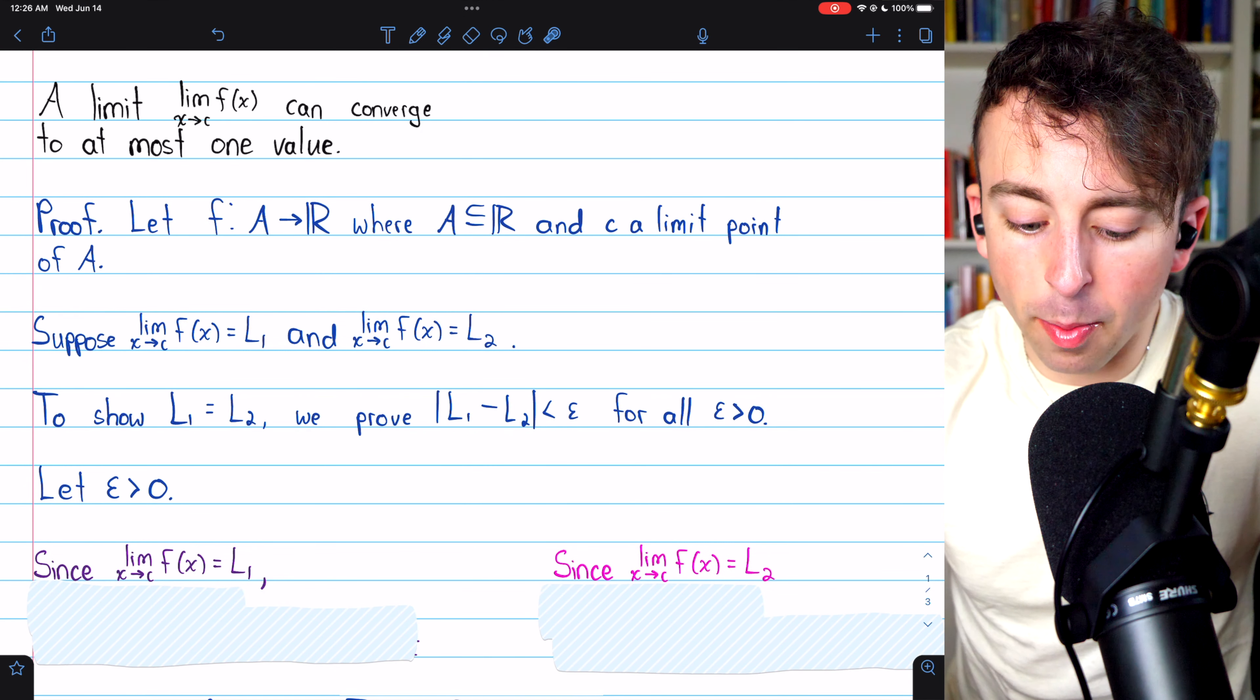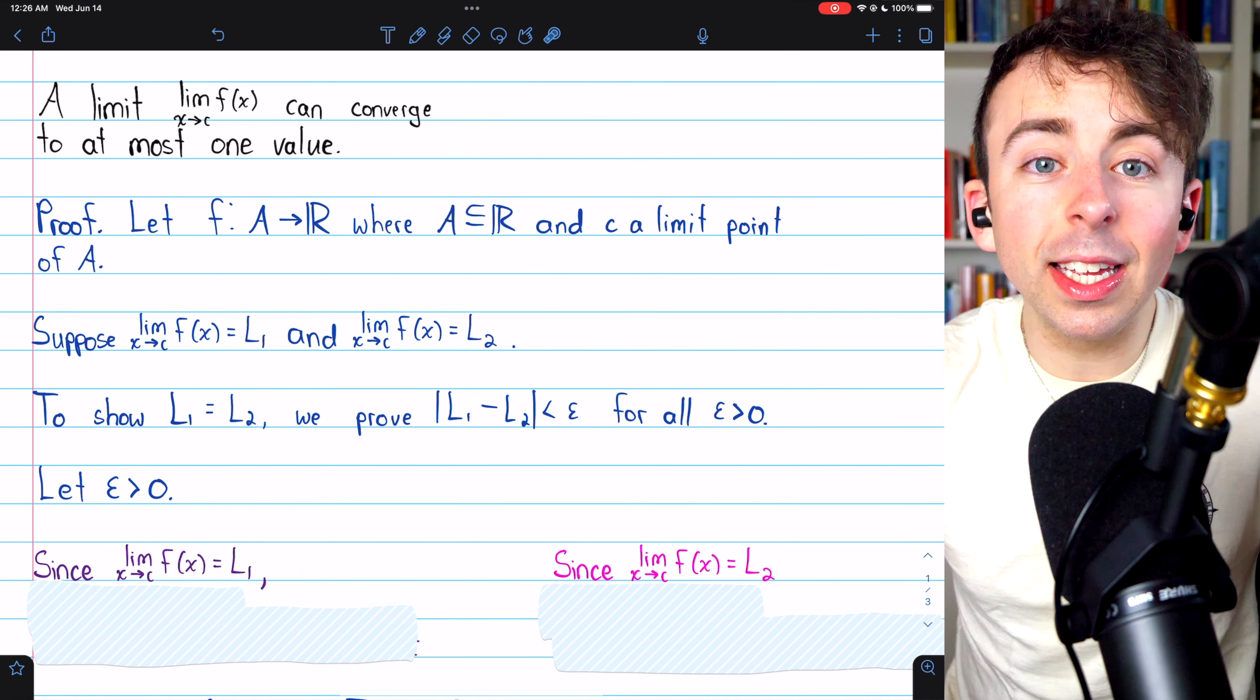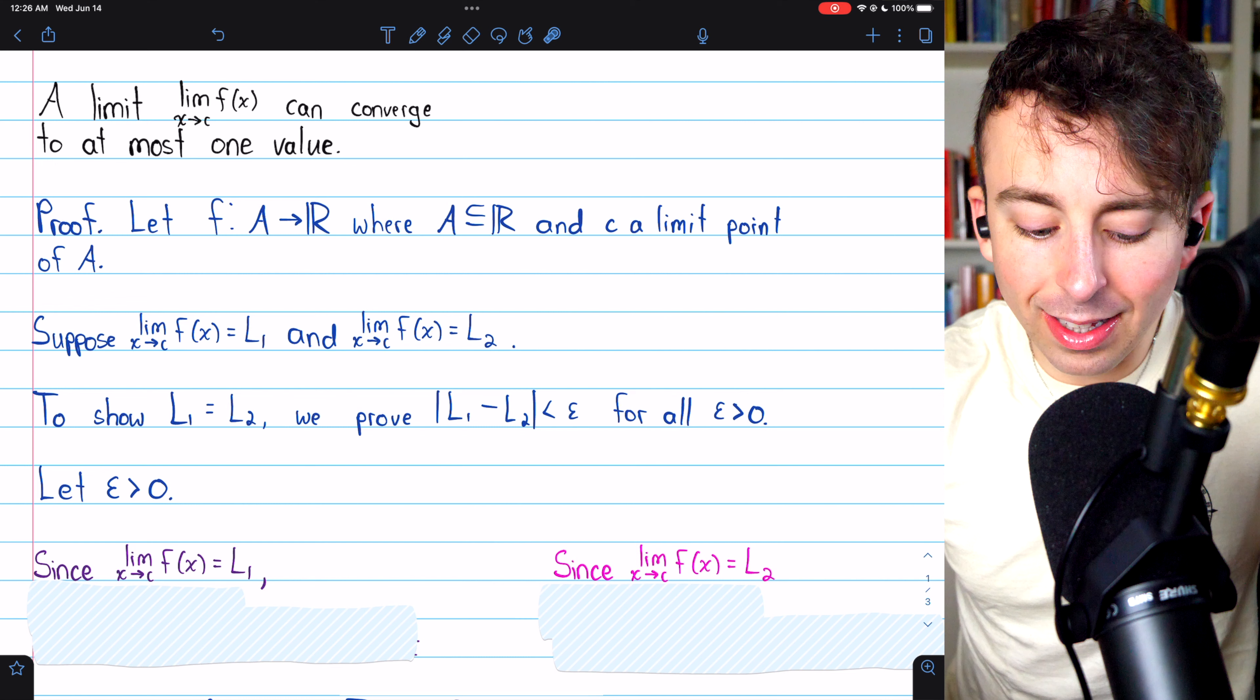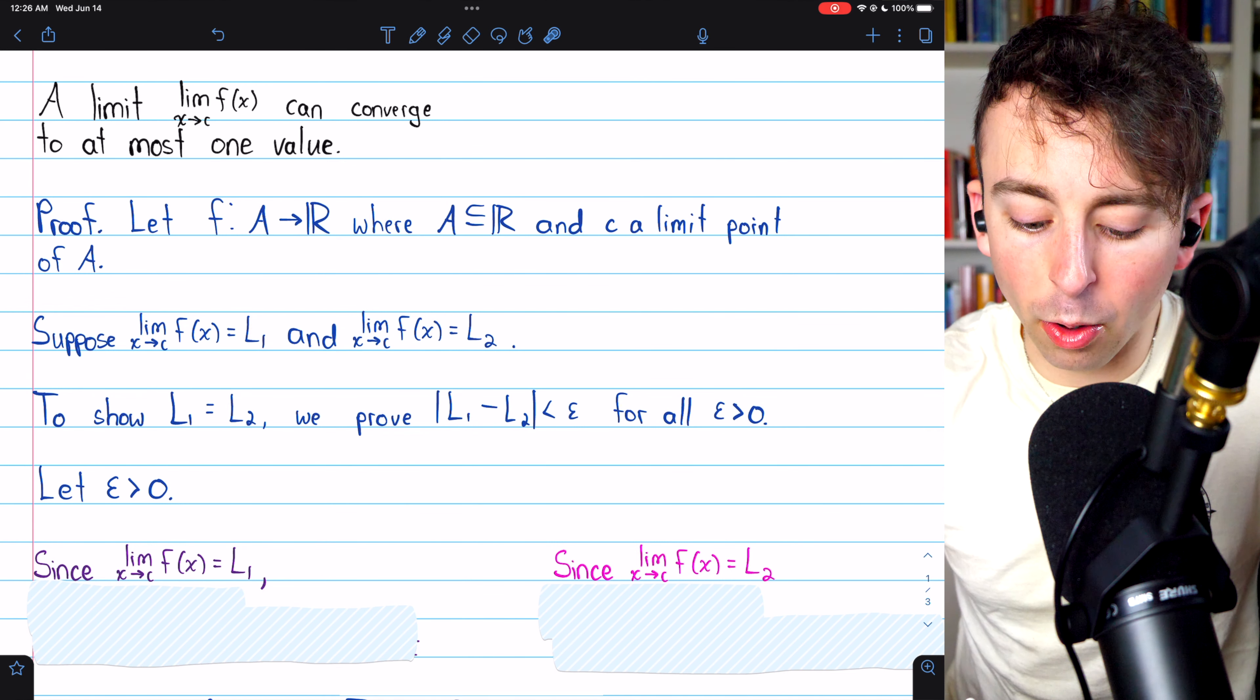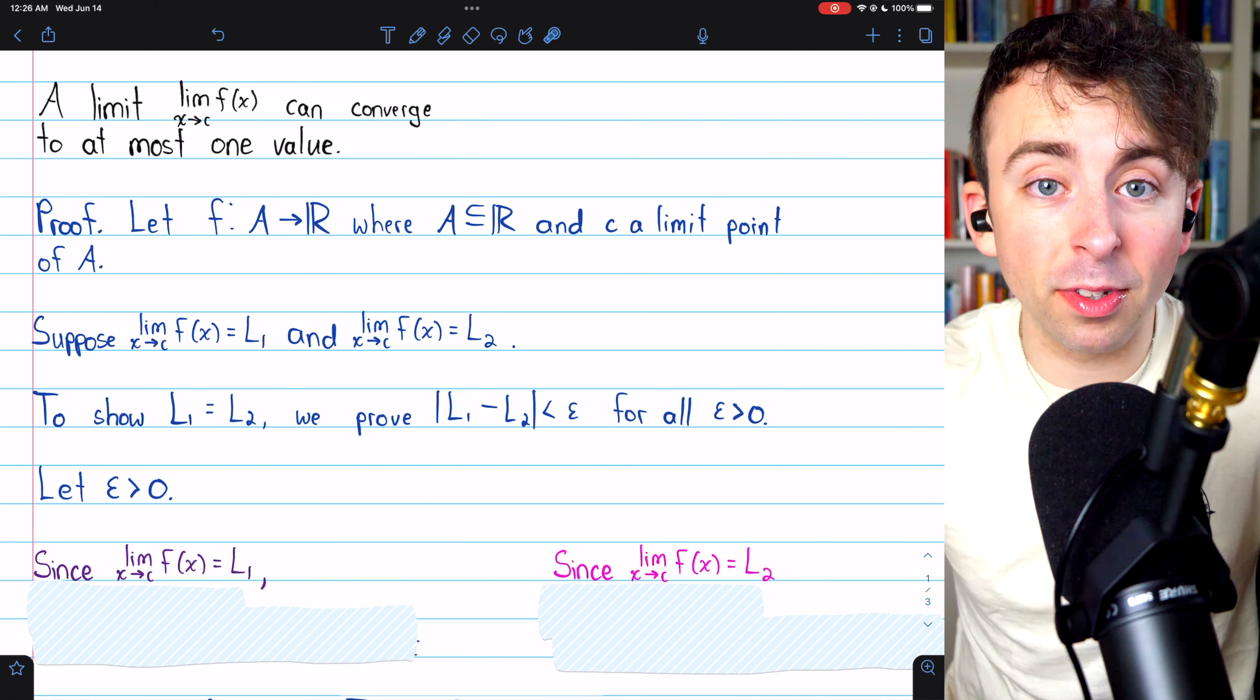Let f be a function from a subset A of the real numbers to the real numbers, and C is a limit point of A. So, we can consider what happens to the function as X gets arbitrarily close to C. So, let's say that the limit of our function as X approaches C equals L1, and the limit of the function as X approaches C equals L2. Perhaps L1 and L2 are the same. Perhaps not.